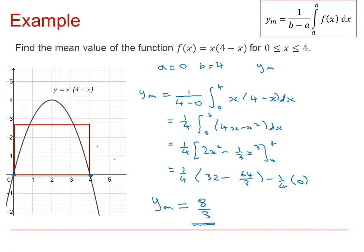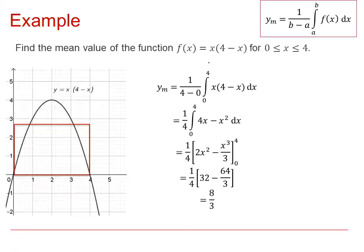So the height of that rectangle is exactly 8/3, and that is y_m. Make sure you identify the a and b values and that f(x) is ready to be integrated. Substitute everything into this formula and it will give you y_m, which is the mean value, or the height of that rectangle across the interval 0 to 4.